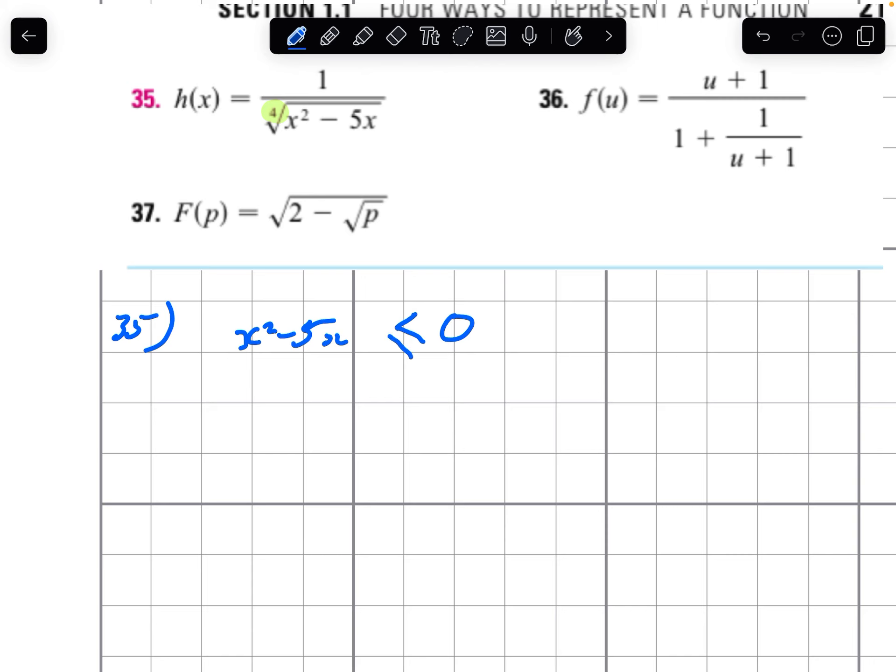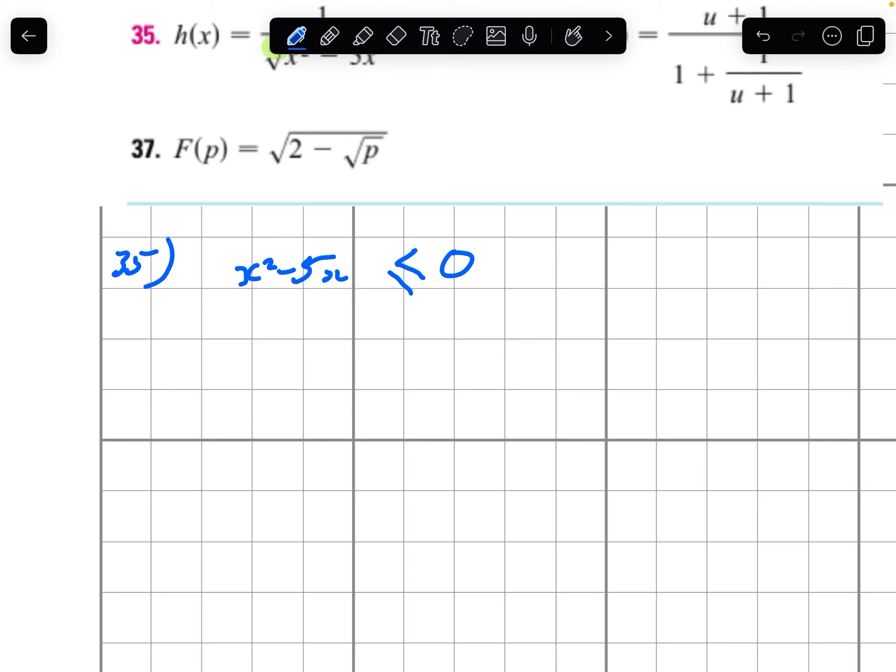If that's equal to 0, the 4th root is 0, that'll give us an error as well. So we need to solve this inequality. We can factor this, x times x minus 5.